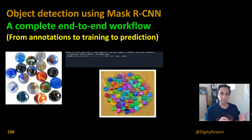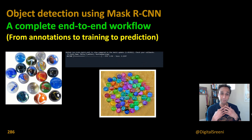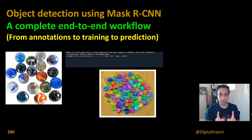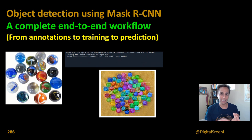Don't forget to hit the subscribe button so you know when these videos are out. Coming back to what we are trying to do, we are going to annotate images and download the annotations as JSON files, both in VGG format and also in COCO style format. I'm going to share the code to handle this data. They both are JSON files but they're slightly different and we'll go through that in a minute.